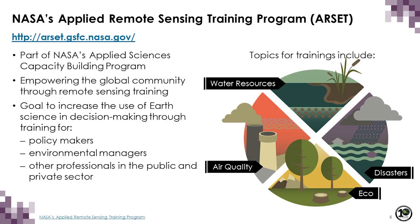RSAT is NASA's Applied Remote Sensing Training Program. It is part of NASA's Applied Sciences Capacity Building Program, set up to empower the global community through remote sensing training with the goal of increasing the use of earth science in decision making. This training is provided for policy makers, environmental managers, and other professionals in both public and private sectors. RSAT conducts training in thematic areas including water resources, air quality, ecosystem and land management, and disasters.